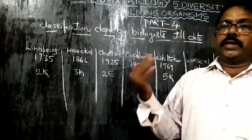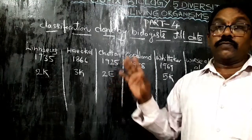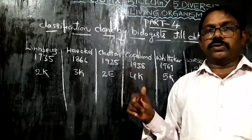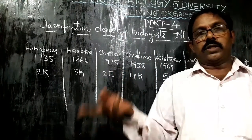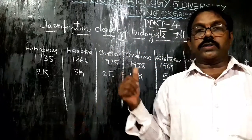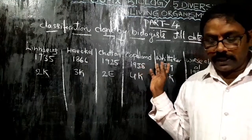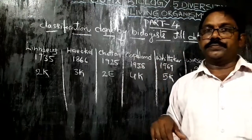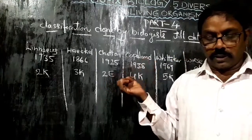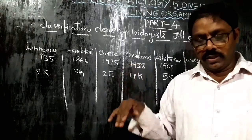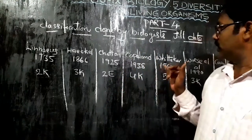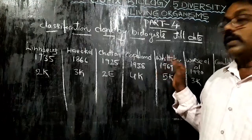Whittaker's classification is mainly dependent on similarities. The five kingdoms are: Monera, Protista, Plantae, Fungi, and Animalia. The first is Monera, the second is Protista, the third is Plantae, the fourth is Fungi, and the last is Animalia. This Five Kingdom classification was established in 1969.